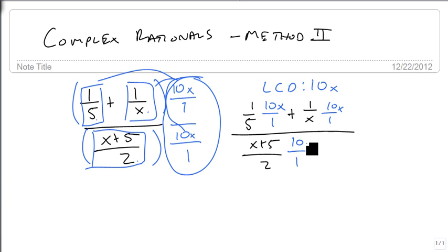And so on top, we simplify each one. The 10 and the 5 leaves a 2. The x and the x leaves a 10. And so on top now, we have 2x plus 10 over,